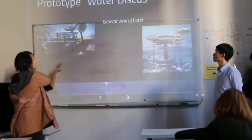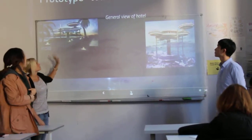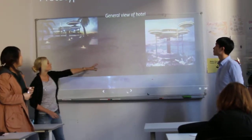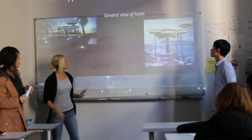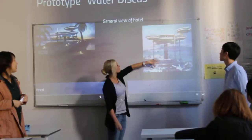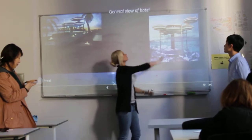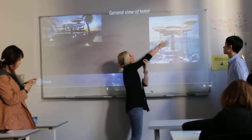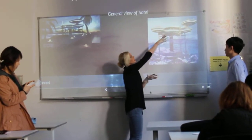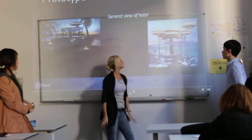As you can see on the screen, there is a prototype of our water disc hotel. We have two parts — two discs: one above the water and one under the water. Above the water, we will find a bar and a big swimming pool with four swimming pools.